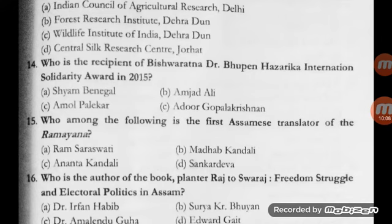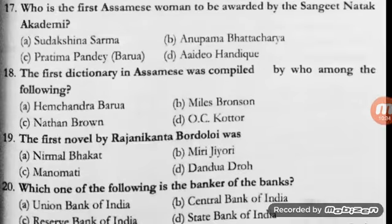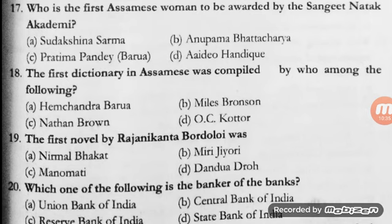Question number 16: who is the author of the book 'Planter Raj to Swaraj: Freedom Struggle and Electoral Politics in Assam'? Options: Dr. Irfan Habib, Suryakumar Bhuyan, Dr. Amulendu Guha, Edward Gait. The correct option is C — Dr. Amulendu Guha.